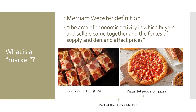A market for anything is essentially all the buyers and all the sellers of that product. Take the example of the pizza market in Columbus, Ohio — there's competition between Jets Pizza and Pizza Hut. Both make pepperoni pizza; it looks and tastes different and you probably have your favorites. When we decide we want to buy a pizza, we are part of the pizza market — we are a buyer choosing between various sellers.